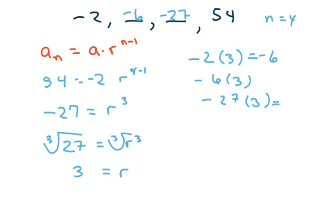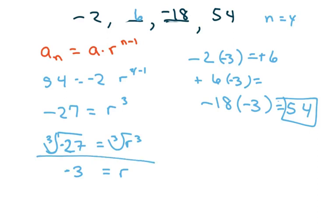Then we have negative 27 times 3, which should be 54. Wait, I wrote it down wrong. This should be negative 3 as r. So it's negative 2 times negative 3, which is positive 6. And then positive 6 times negative 3 is negative 18. And then negative 18 times negative 3 equals 54. That's what you get when you write your numbers down right.